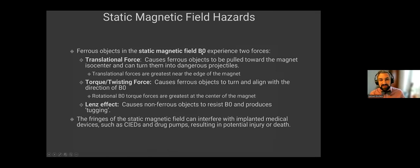But the hazards of these static magnetic fields are that ferrous objects can experience two forces. There's the translational force that causes ferrous objects to be pulled towards the magnet and turns them into dangerous projectiles. You may have heard stories about oxygen cylinders and various things getting sucked into the magnet. That's from the B0 field. And these forces tend to be greatest at the edges of the magnet. And it's actually zero in the center of the magnet. Believe it or not, once you're in the very center of the MRI, there's no more pulling. There's also a torque or twisting force caused by B0 that causes ferromagnetic objects that are not spherical to try to twist in the magnetic field.